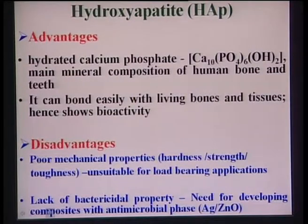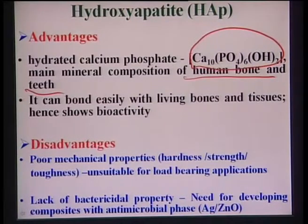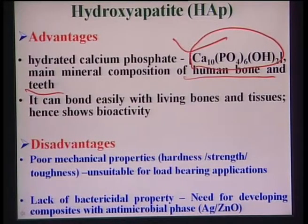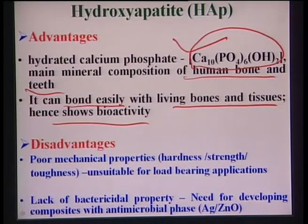To summarize the advantages and disadvantages of hydroxyapatite: its chemical formula is Ca10(PO4)6(OH)2, and it is the main mineral composition of human bone and teeth. Because it is the major mineral component of bone and teeth, it can easily bond biologically with living bones and tissues, and hence hydroxyapatite shows bioactivity.